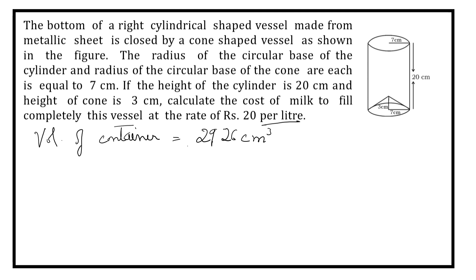1 litre means 1000 centimetre cube. So 2926 centimetre cube is equal to how much litres? We can convert: 2926 divided by 1000, what is it? 2.926 litres.